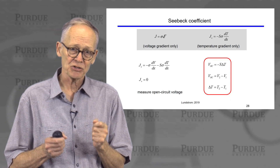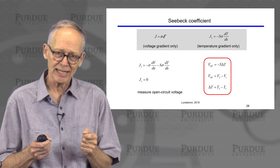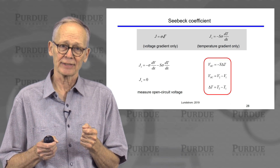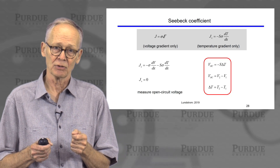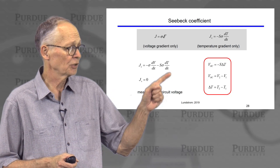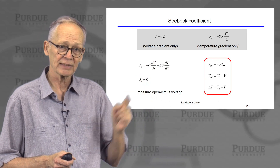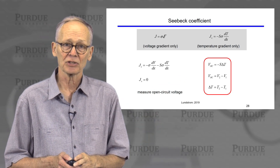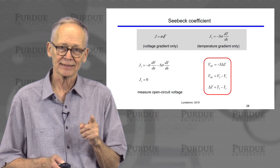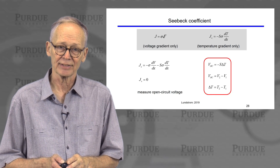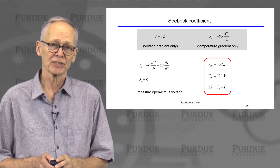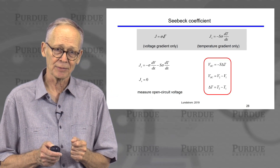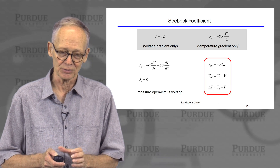If I were to do a measurement of a semiconductor sample with a temperature difference across it and open-circuit that sample so that no current can flow, I would measure an open circuit voltage. You can solve for the open circuit voltage just by setting j equals zero in this expression. If you do that, you'll find that the open circuit voltage is minus the Seebeck coefficient times the difference in temperature. So the Seebeck coefficient is a measure of the open circuit voltage across a semiconductor that has a temperature gradient imposed.